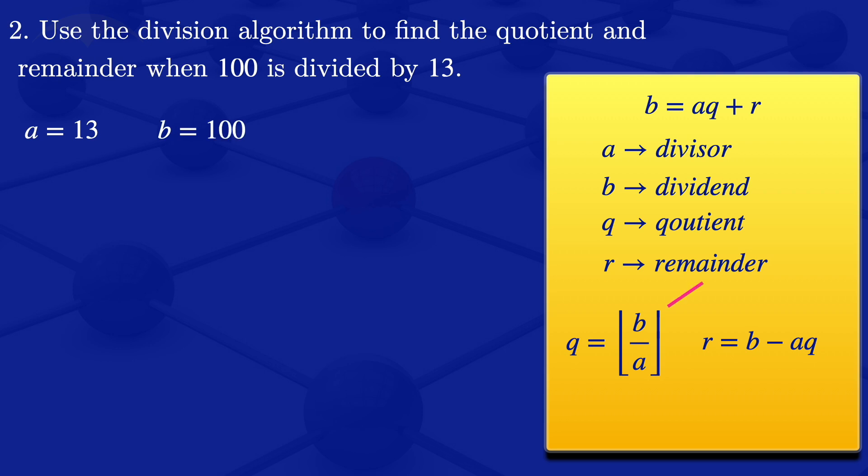Our quotient using this formula, the floor value of B divided by A gives us the floor value of 100 divided by 13, which will give us 7. Then for the remainder, we are using this formula here.